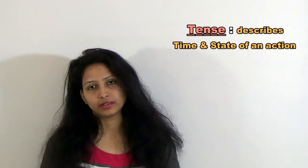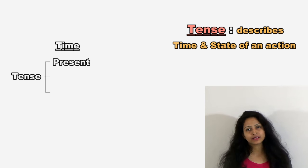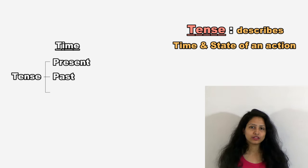I hope you have watched all my previous lectures and solved all the questions given at the end of the lectures. Now I am going to start a very important topic: tense. The tense describes the time and the state of an action. Tense is the change of form in a verb to express the time of an action. In terms of time, tense can be in three forms: present tense, past tense, and future tense.